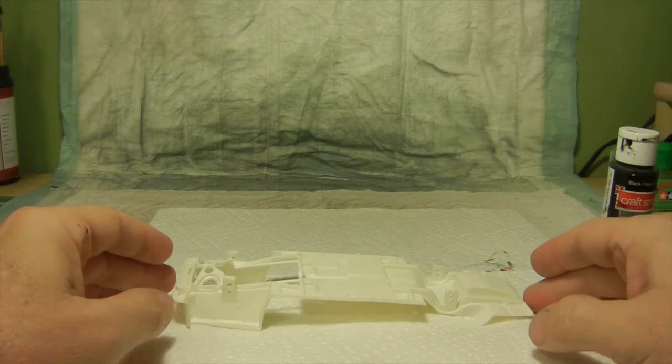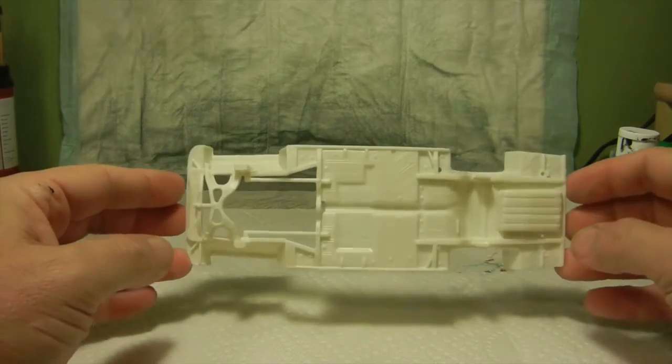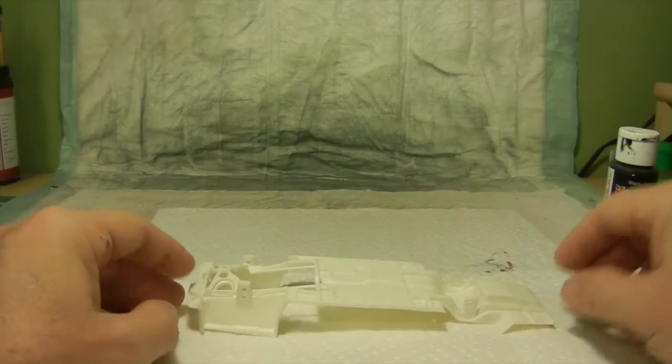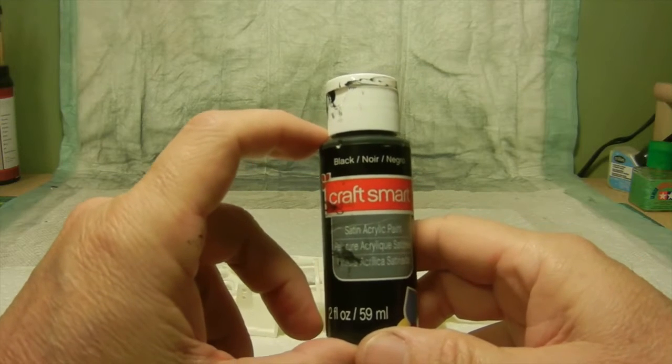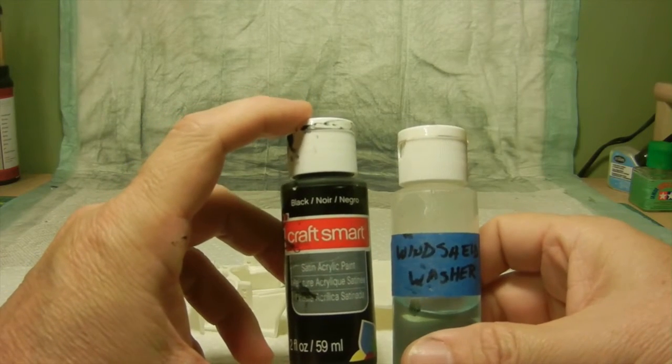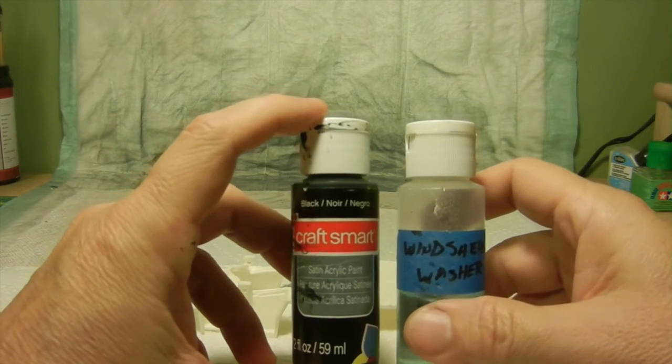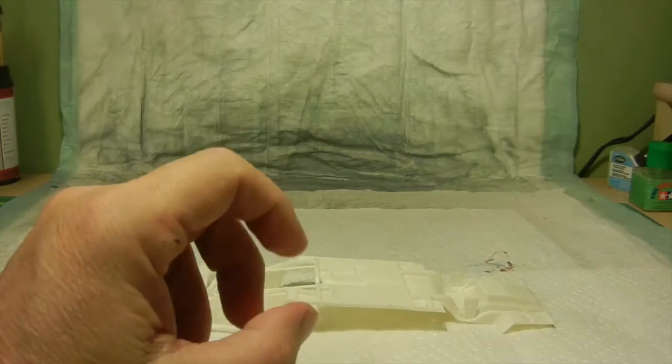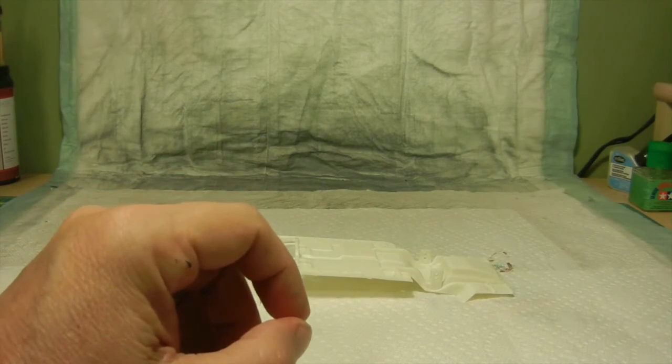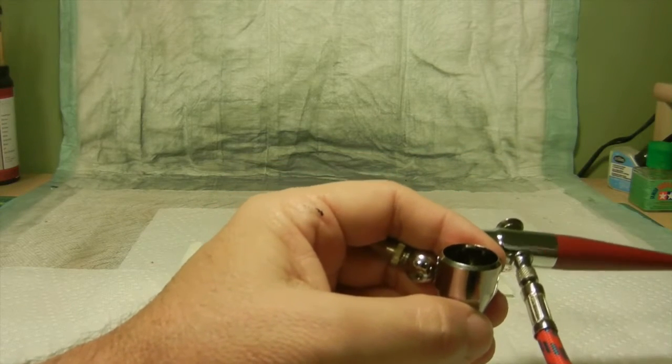And we're back. And right now I'm going to be in the process of actually airbrushing the part of the chassis here. I'm going to start off with the bottom part of the chassis. I'm going to go ahead and use the black satin acrylic paint as well as, of course, the windshield washer to thin it down with. And I'm going to go ahead and spray it with my Pache airbrush. So we'll give her a mix and show you basically how I go about doing this.